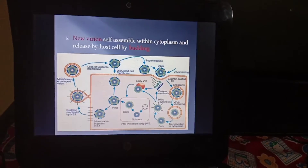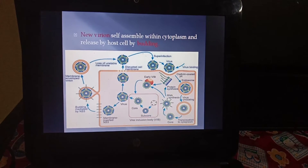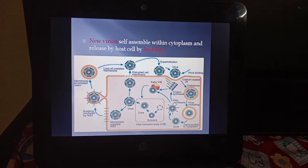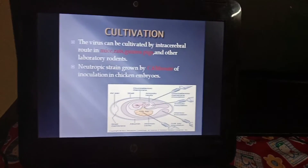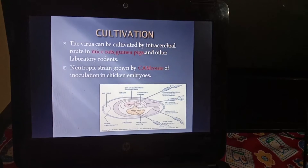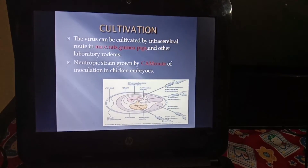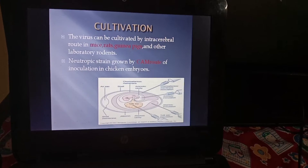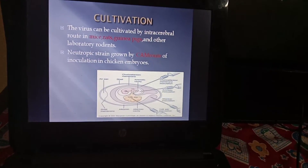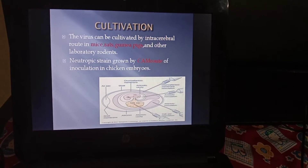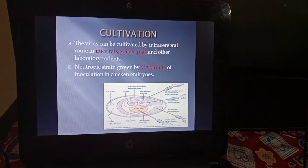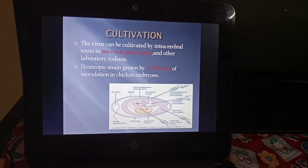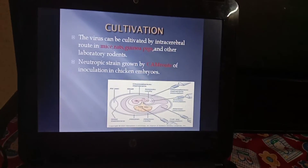Viral progeny exit from the cell. New virions assemble within the cytoplasm and are released from the host cell by budding. Regarding cultivation, the virus can be cultivated by intracerebral route in mice, rat, guinea pig, and other laboratory rodents. Neurotropic strains are grown by the CAM route of inoculation in chicken embryo. Most viruses are grown in embryonated chicken eggs — specifically 9 to 11 day old embryonated chicken eggs — into which the virus inocula is inserted to cultivate the virus.